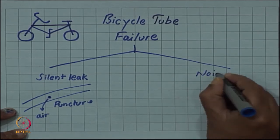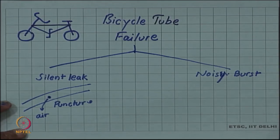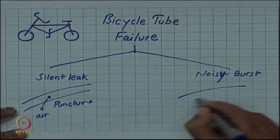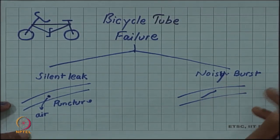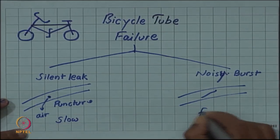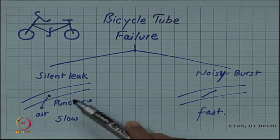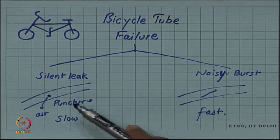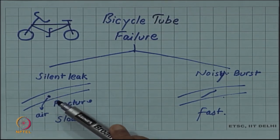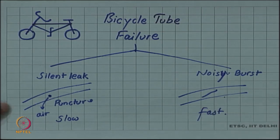The other way of failure is a noisy burst, which can be quite embarrassing. In this case there is a rupture in the tube — a long crack — and it is quite sudden. So one failure mode is slow and the other is fast. In both cases air is coming out of the tube, but in one case it comes from a stable hole slowly, and in the other it comes out rapidly with a large crack or tear in the tube surface. What is the difference between these two situations, and what causes this difference? This is what we will try to look at.